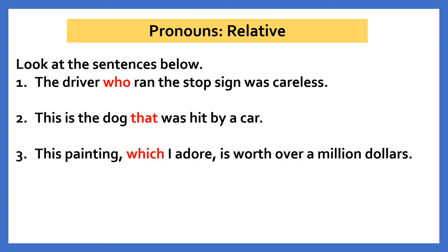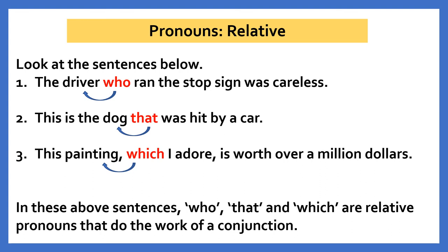We now move ahead and learn about relative pronouns. Look at the sentences given below. First: The driver who ran the stop sign was careless. Second: This is the dog that was hit by a car. Third: This painting which I wore is worth over a million dollars. In the first sentence, the word 'who' relates to the driver. In the second, the word 'that' relates to the dog. In the third, the word 'which' relates to the painting. In all these sentences, the words who, that and which are relative pronouns.